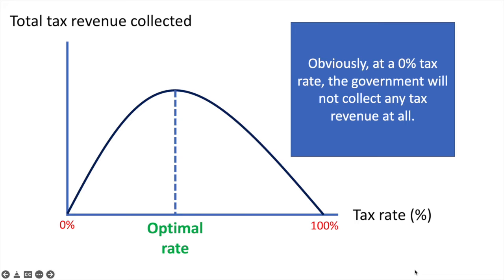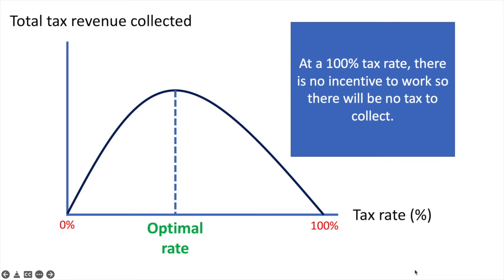Obviously at a 0% tax rate the government will not collect any tax revenue at all. At a 100% tax rate there is no incentive to work so there will be no tax to collect or it may create a significant hidden economy in which no earnings are reported.